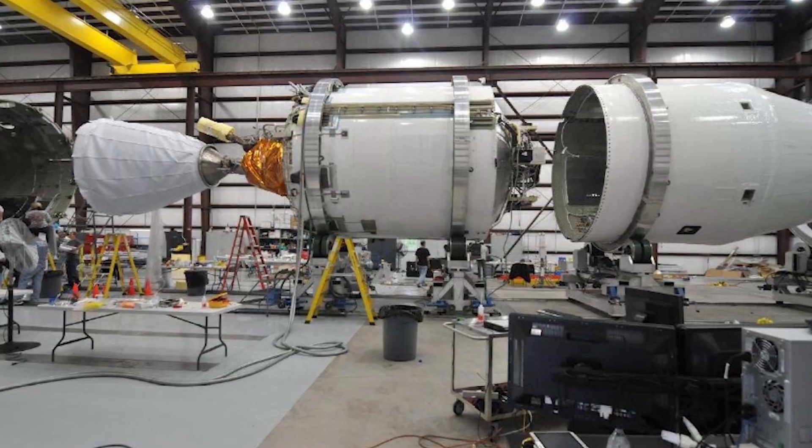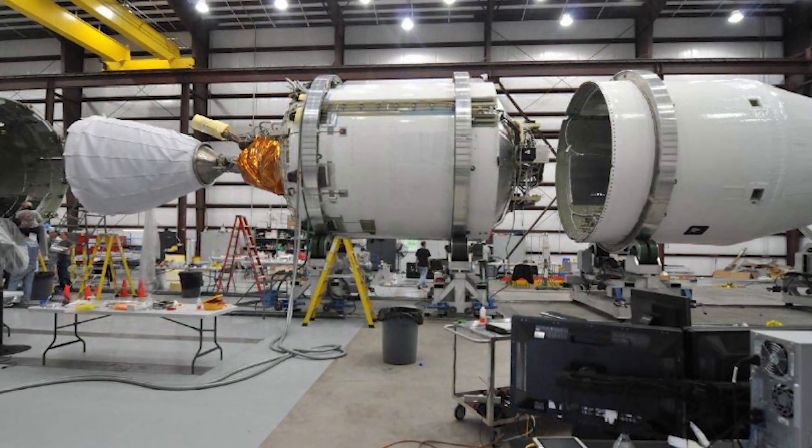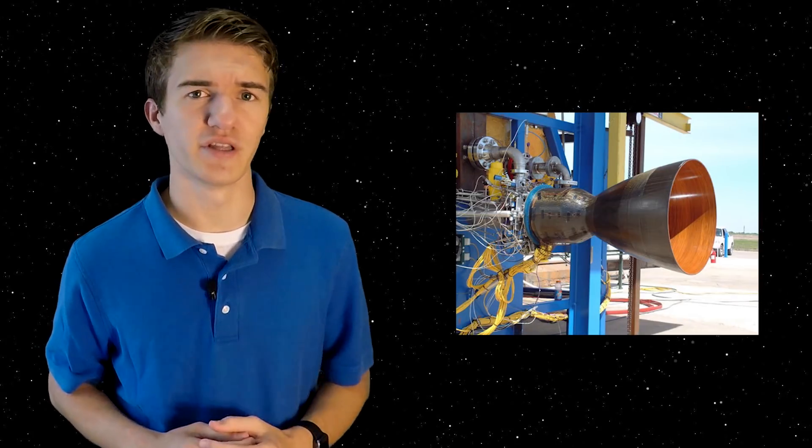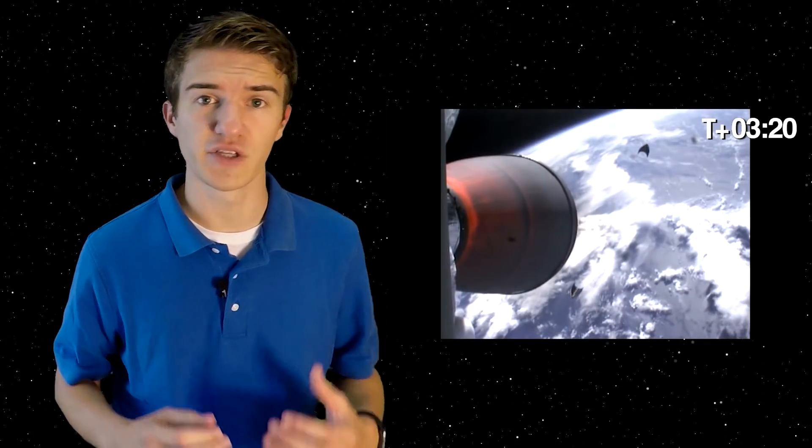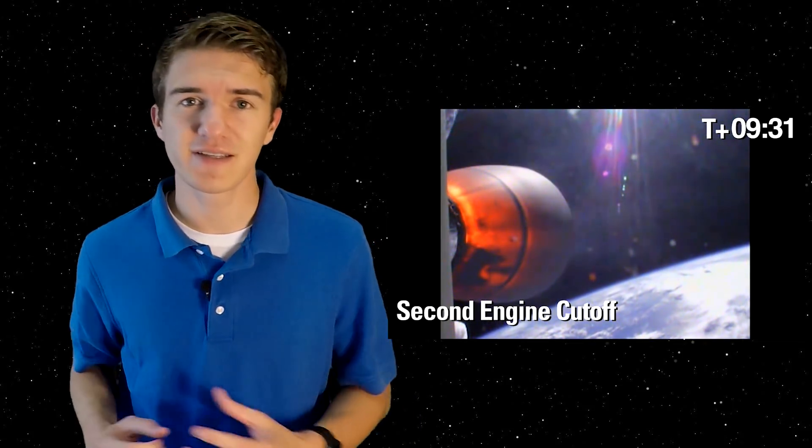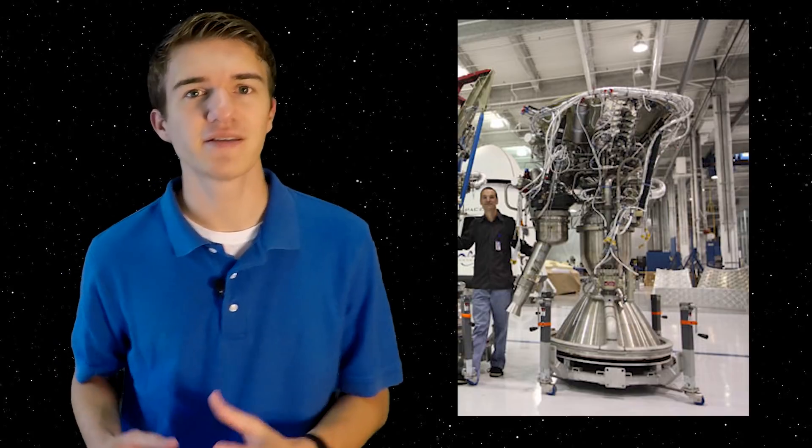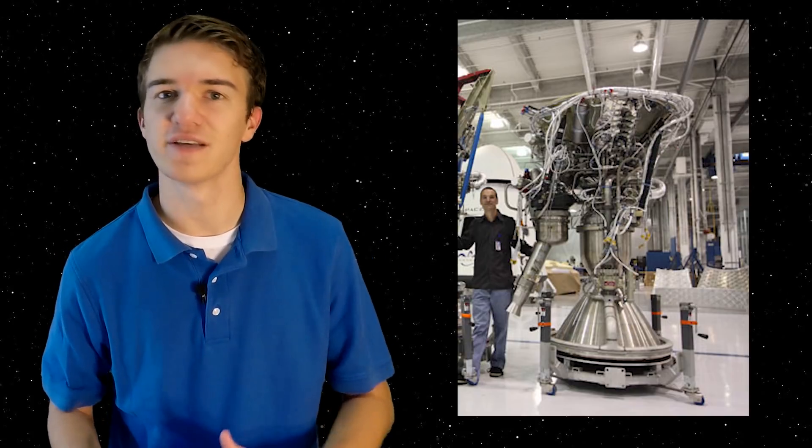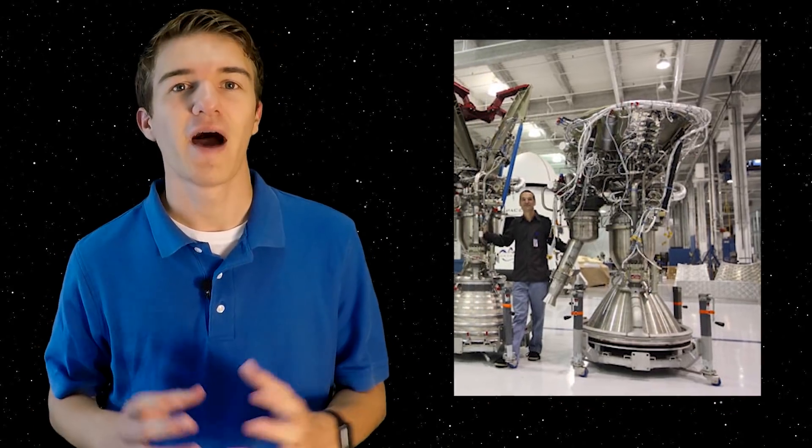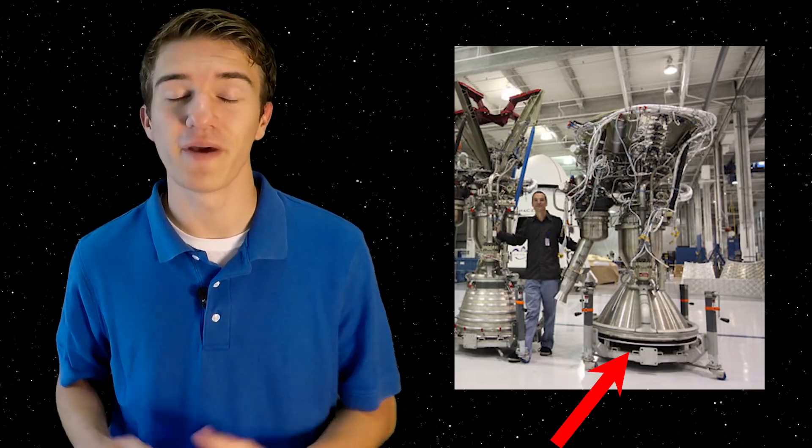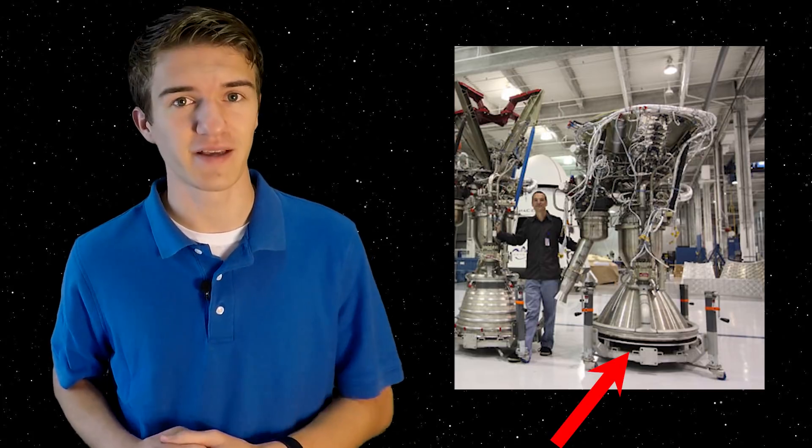Now the second stage also has some major differences. If you remember with the Falcon 1, it used a Kestrel engine that took it from its suborbital flight to its final orbit. However, in the Falcon 9, they replaced this Kestrel engine with a Merlin 1C vacuum engine, basically the exact same as the Merlin 1C used in the first stage. However, it has an expanded nozzle that makes it more efficient when it's operating in the vacuum space.